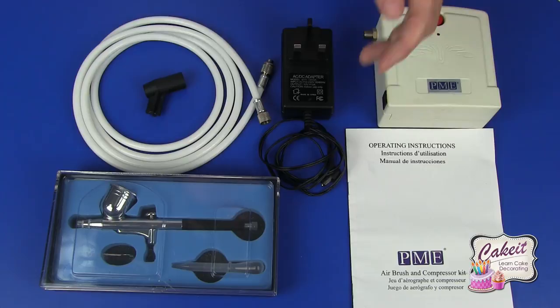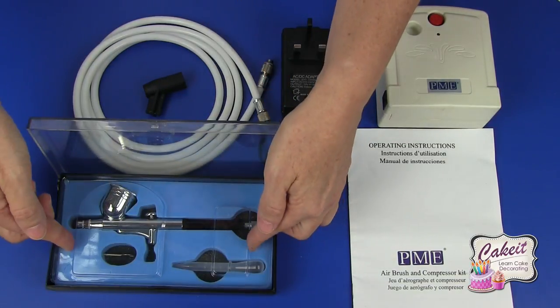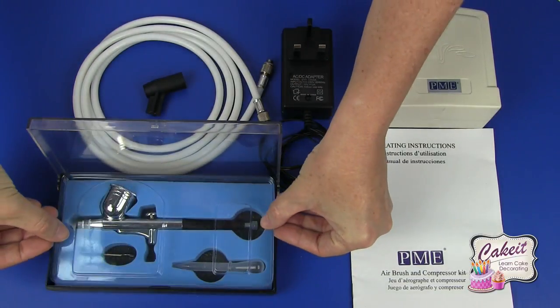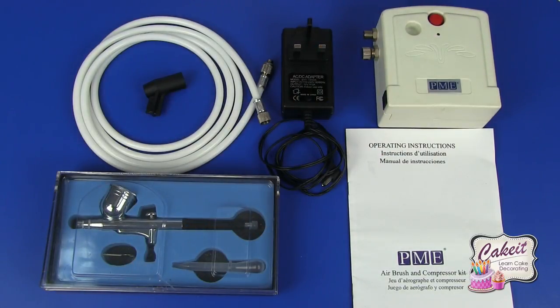We have our single gravity feed airbrush. This is available in its protective packaging and we also have the pipette and the wrench inside the packaging as well. This concludes the contents of the PME airbrush and compressor kit.